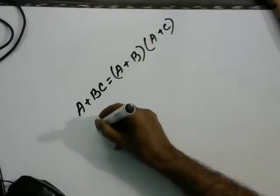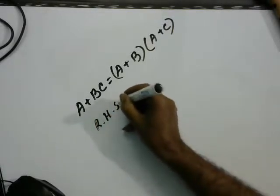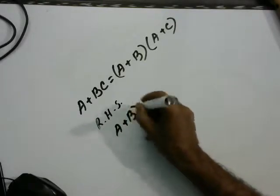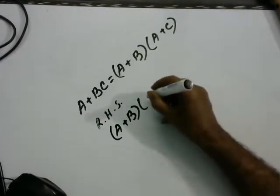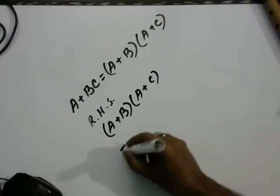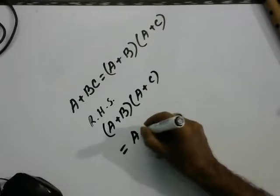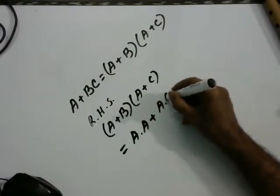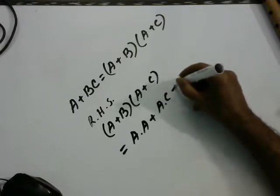Our right hand side equal A plus B into A plus C equal A into A plus A into C plus B.